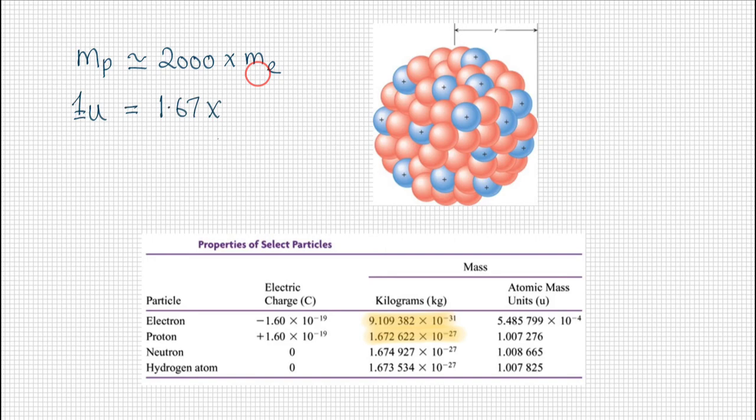We need to be able to convert between masses that are given in kilograms because we don't want to work with numbers this small. Therefore we're going to use the atomic mass unit U, and you can see it over here that the atomic mass of a proton is about the same as a neutron, which is about the same as a hydrogen. There are small differences there which we will talk about later, but at the moment, one atomic mass unit is simply about 1.67 times 10 to the minus 27 kilograms.